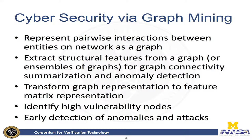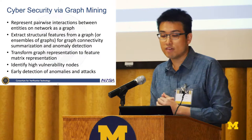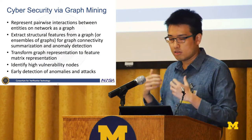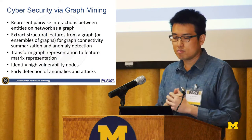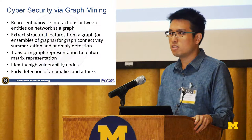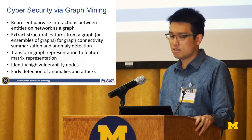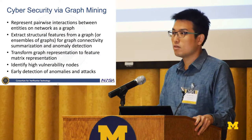The purpose of our work is to use graph mining techniques by representing pairwise interactions between entities or observations on a network as a graph. These pairwise interactions can be transportation routes or actual communication patterns between nodes. We extract structural features from this graph to do graph connectivity summarization and anomaly detection. We transform graph representations to vector-based representations, enabling machine learning, signal processing, and graph mining methods. The ultimate goal is to identify high-vulnerability nodes and do early detection of anomalies and attacks.